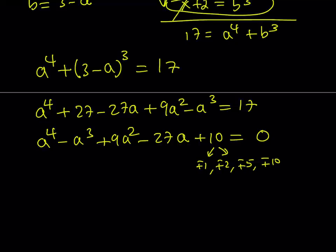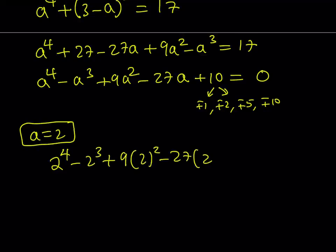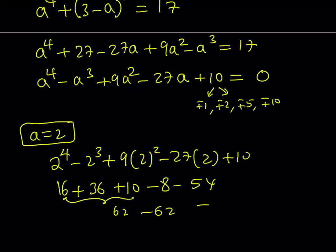So you can go ahead and test all these out and then find which one is going to work. But after the examination of all these numbers by substitution, you're going to realize that a equals 2 is a solution. Now why do I say that? Because I tested it out for you. And if you plug in 2, you'll see the following. 2 to the 4th power minus 2 to the 3rd power plus 9 times 2 squared minus 27 times 2 plus 10. Let's go ahead and add the positives first. 16 plus 36 plus 10 minus 8 minus 54. This is 62, and that's minus 62. And the result is 0, which means that a equals 2 is a solution.